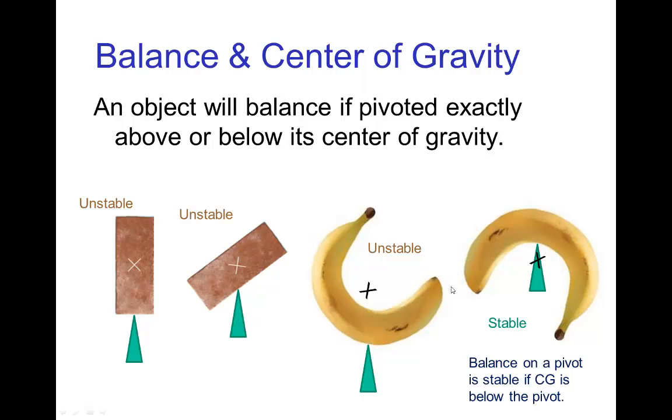But if we have a situation like this last illustration with the banana, here because of the position of the center of gravity is just below the pivot point, then in this case if the banana shifts a little bit, it will just rock back and forth on that pivot point.